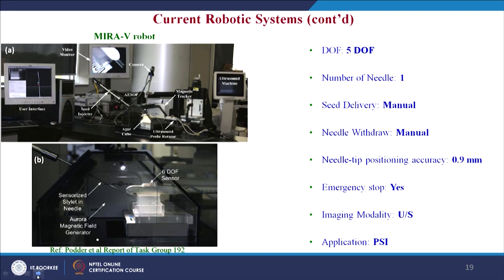The MIRA 5 system, developed by the University of Western Ontario, Canada, stands for Minimally Invasive Robot Assistant for Image-guided Lung Brachytherapy. It is a 5-degrees-of-freedom system with manual seed delivery and needle withdrawal. Needle tip positioning accuracy is 0.9 mm. It is equipped with an emergency stop and is used for seed implantation.